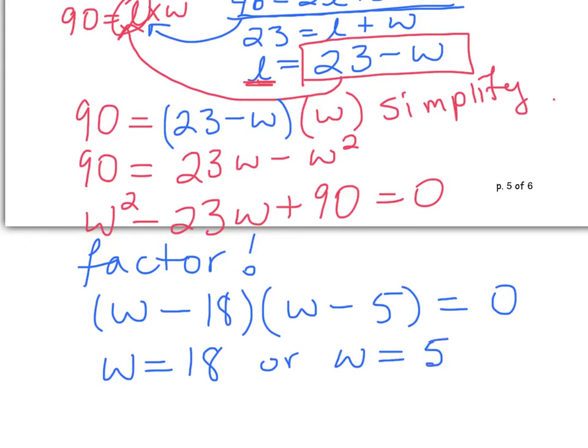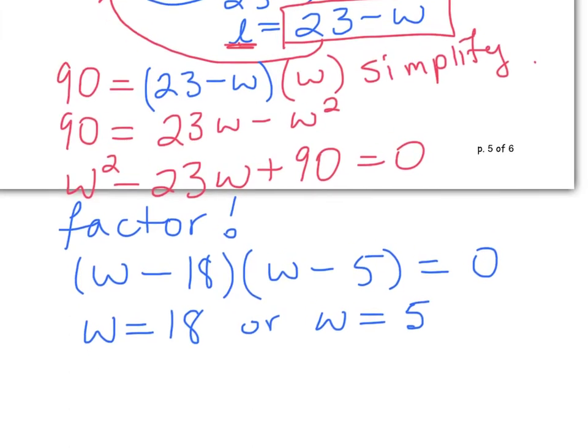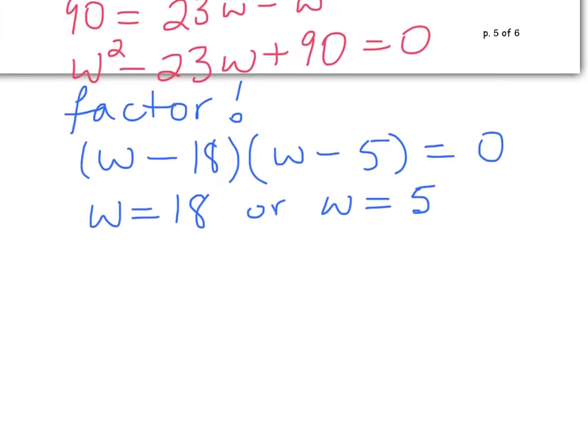Now we're not done the question because what we need to do is we need to figure out the dimensions. So far, I have two options of w. So what I need is length. So we know length has a formula of 23 minus w. So let's use this one here first to figure it out and see what we end up with. 23 minus 18. Well, that equals 5. That's just our other answer.